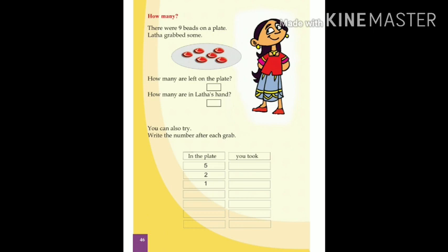Below that you can also try. Write the number after each grab. Suppose in the plate there is 5. How many are in the plate? Count: 5, 6, 7, 8, 9. So you want to write 4.